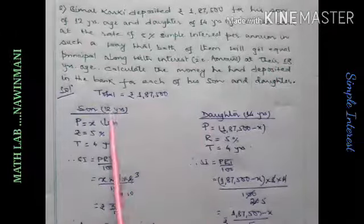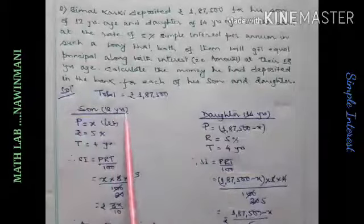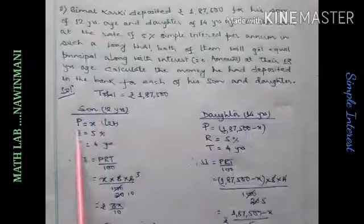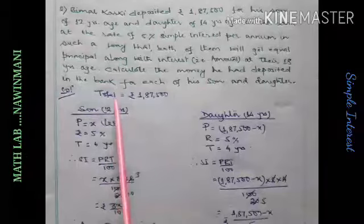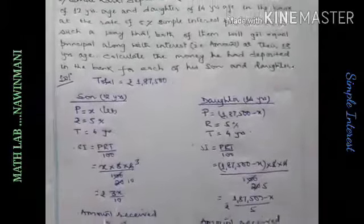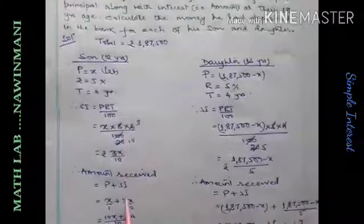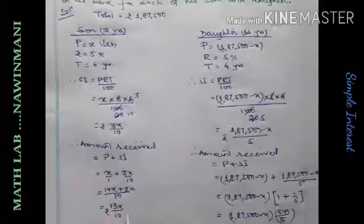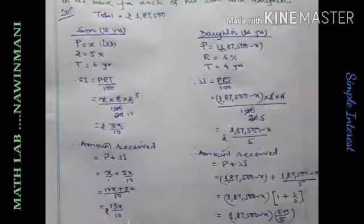So, son is 12 years. Let he deposits x rupees for son. Rate is 5%. Time 6 years because he is 12 years, when he reaches 18 years, 6 years pass. So, SI will be 3x by 10. Amount received will be P plus SI. Principal is x. SI is 3x by 10. And then you take LCM. You get 13x by 10. Son will receive this amount when he reaches 18 years.